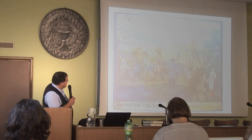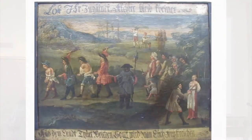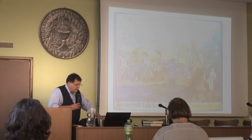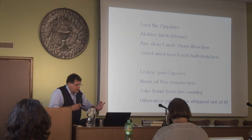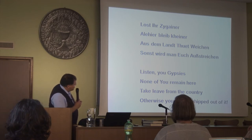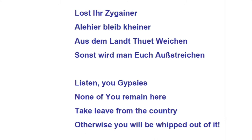In the 18th century many provinces start to ban the Roma from their lands. Here is a border plaque from the county of Styria in Austria illustrating the punishments that await the Roma if they enter. The text in German reads: 'Listen, you gypsies, none of you remain here. Take leave from the country, otherwise you will be whipped out of it.' So you see they lose this status very quickly.